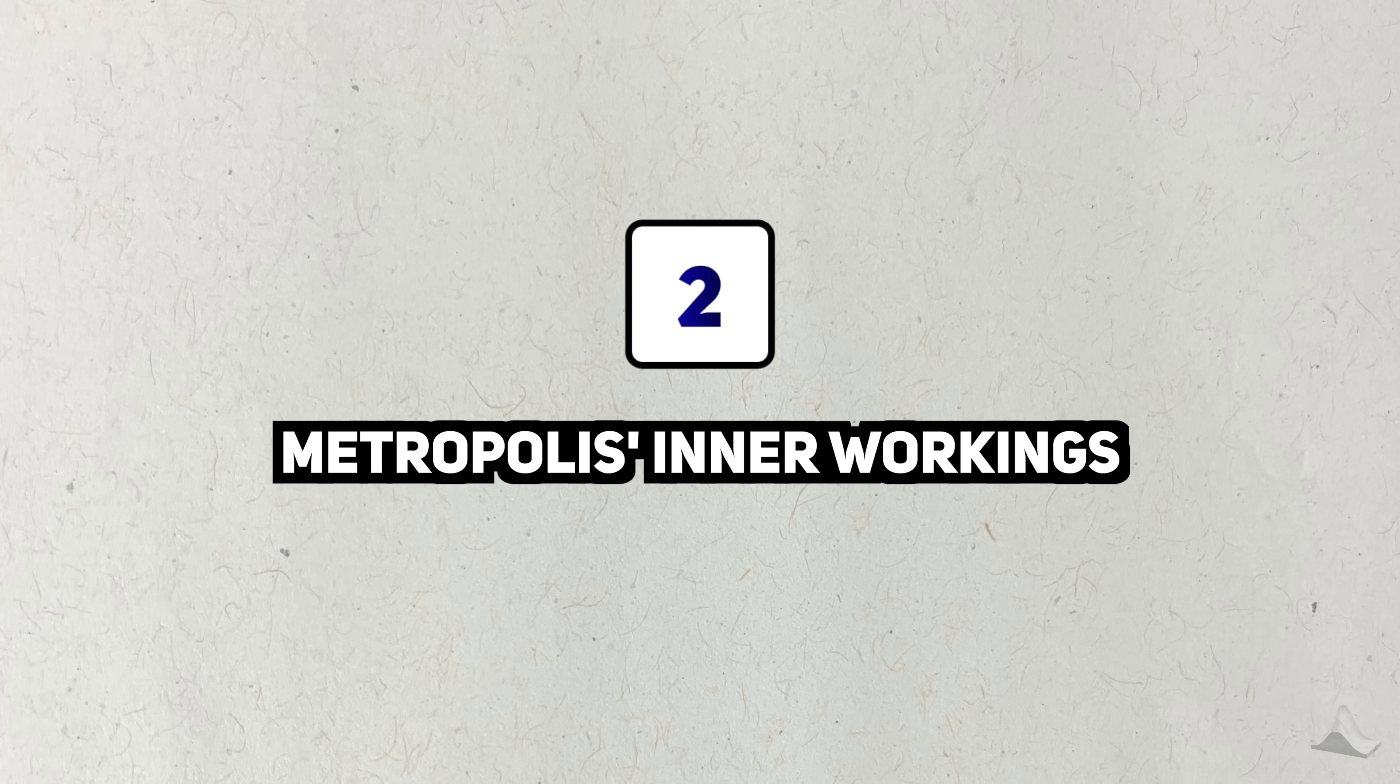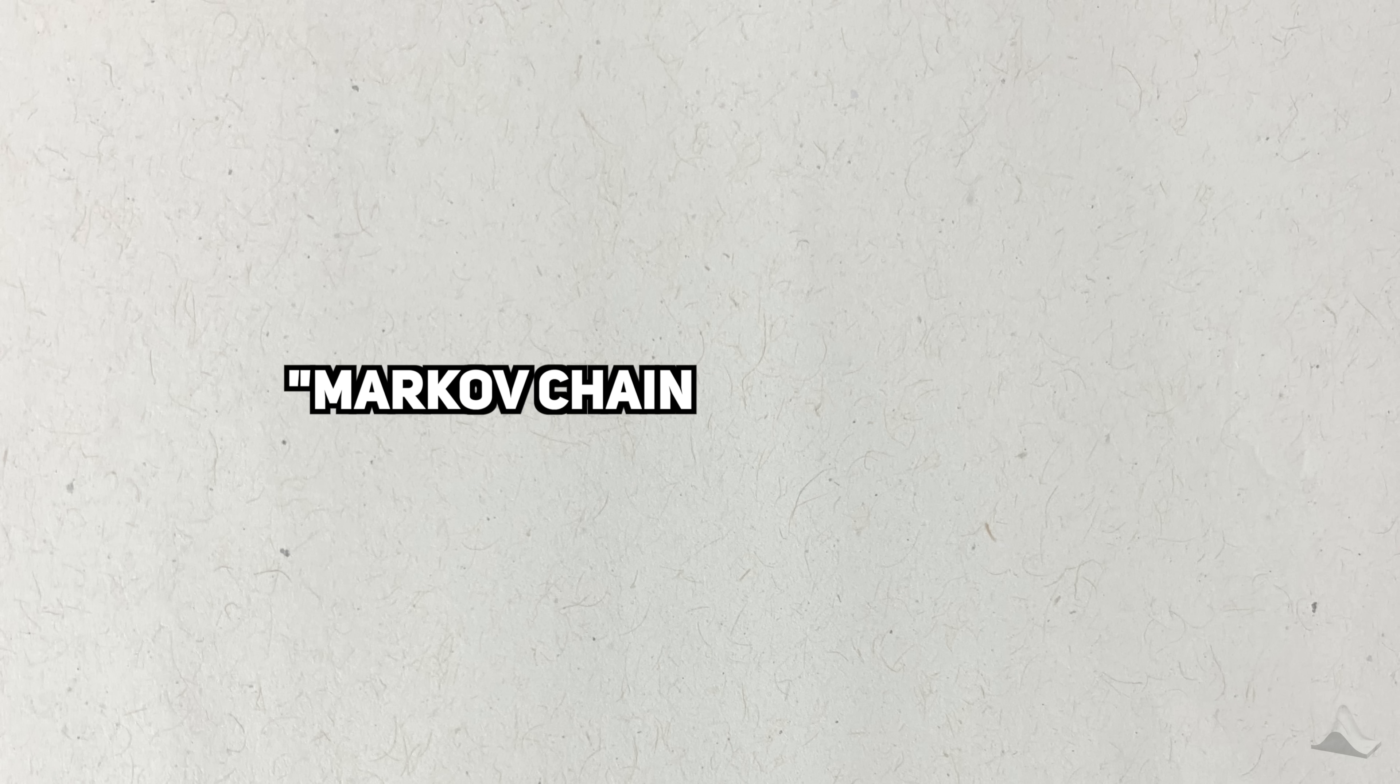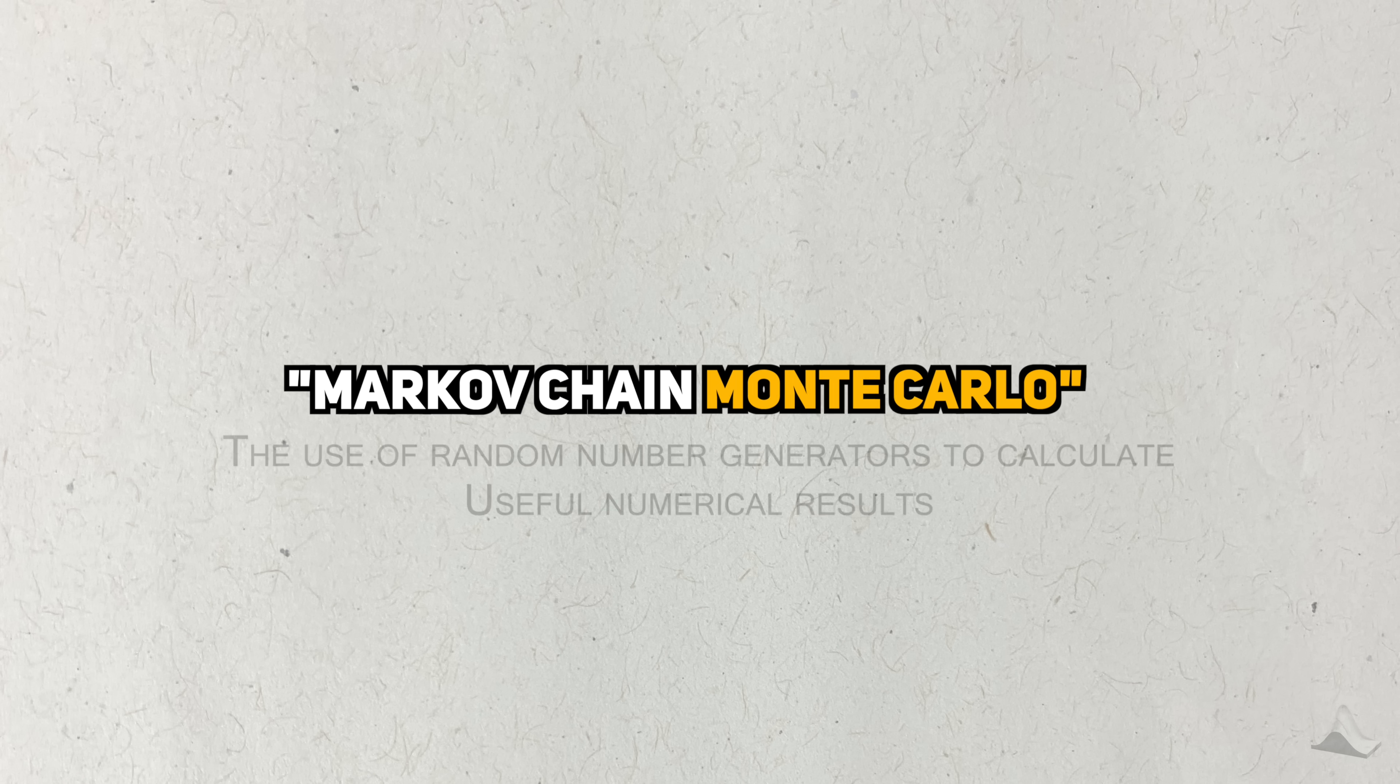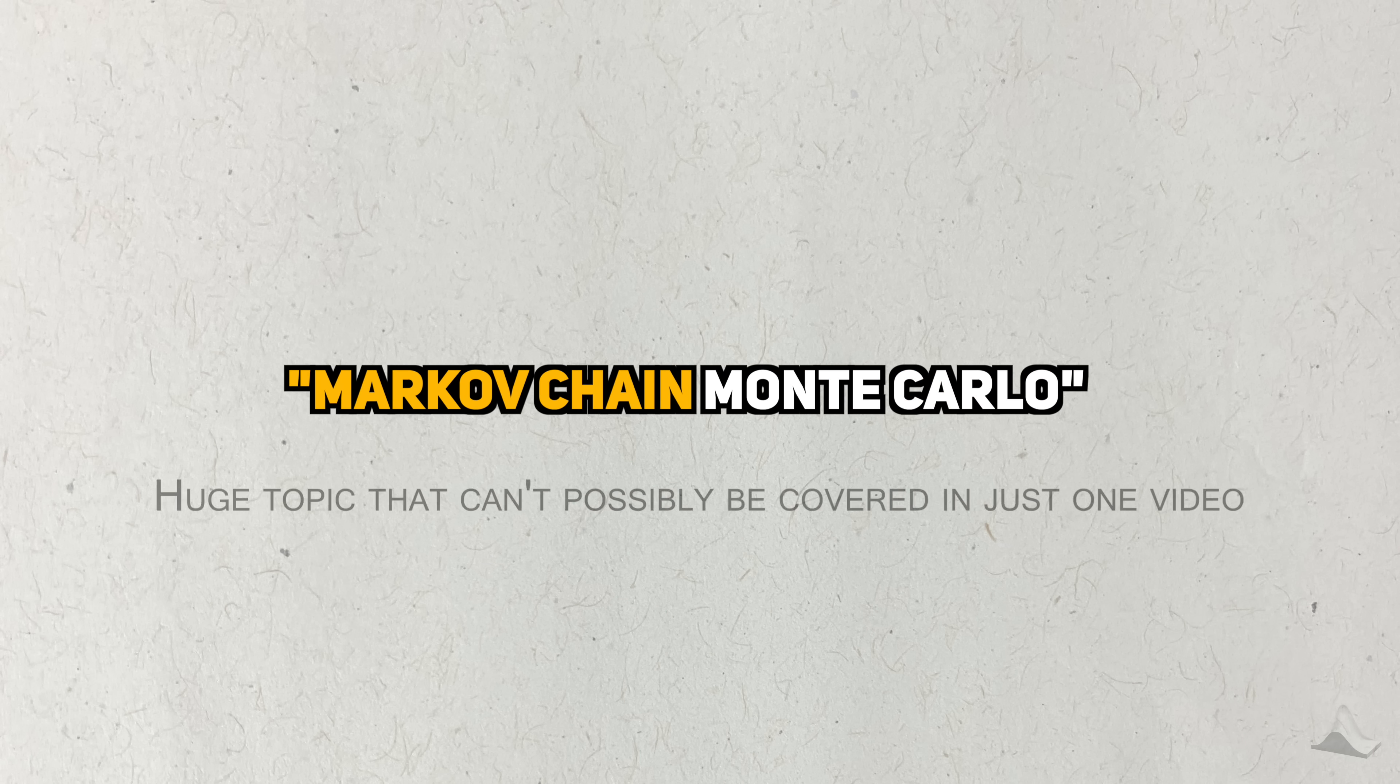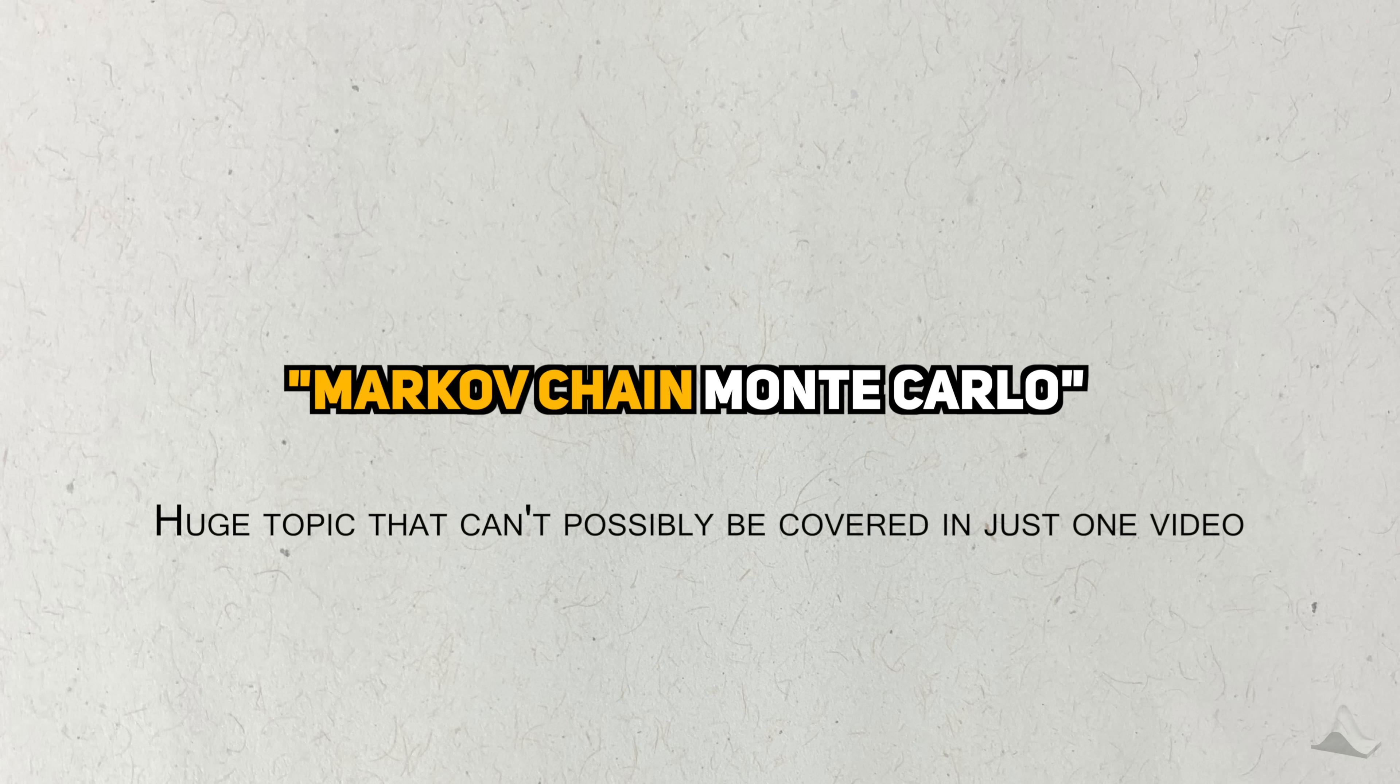The Metropolis algorithm is what's called a Markov chain Monte Carlo algorithm, or MCMC for short. Monte Carlo refers to the use of random number generation to calculate useful statistical objects, like an expected value or a complicated probability distribution. Markov chains are a huge topic that I can't possibly cover in one video, so you're just going to get the bare basics needed to understand the algorithm.